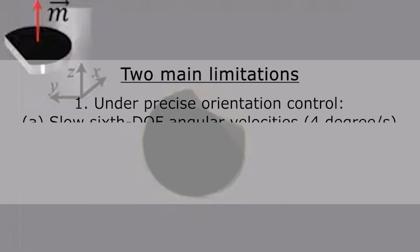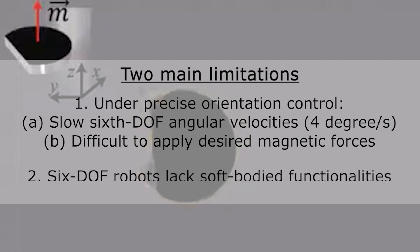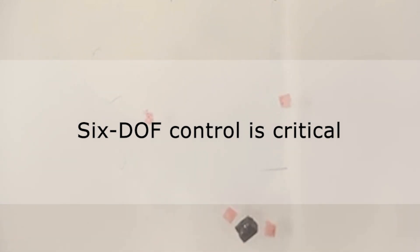And while there exist robots that can be controlled over their six degrees of freedom, under precise orientation control, these robots have slow six degree of freedom angular velocities, and it is difficult to apply desired magnetic forces on them. Also, current six degrees of freedom robots lack soft-bodied functionalities. Possessing precise control over the orientation of magnetic soft robots will be critical in dictating their positioning and manipulation performance.